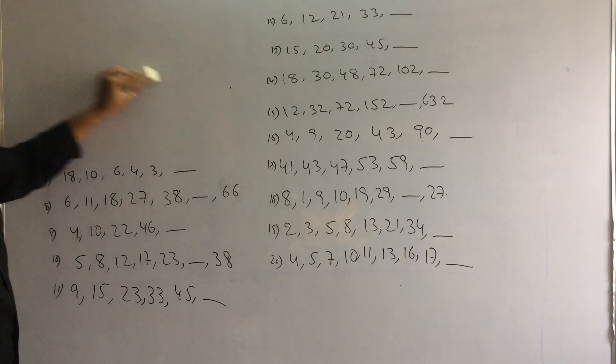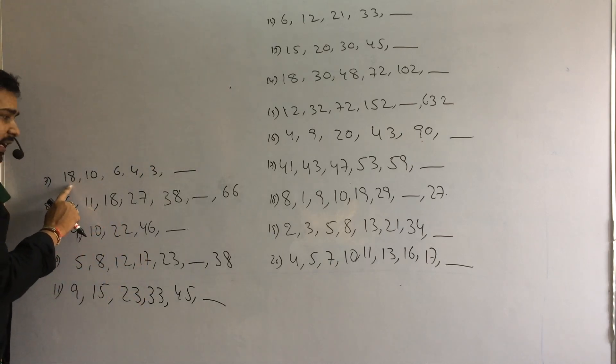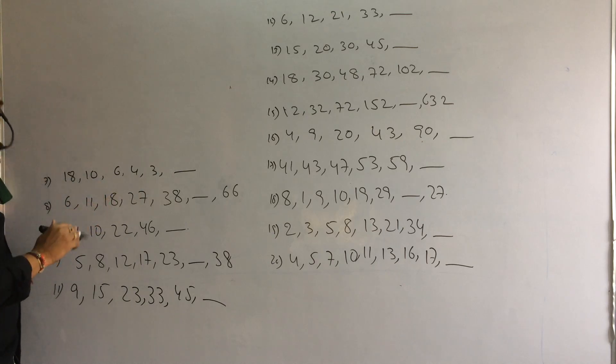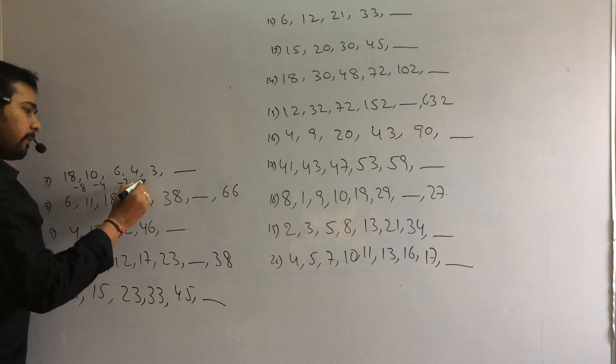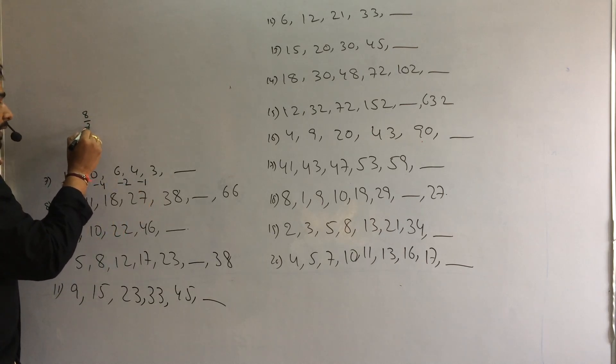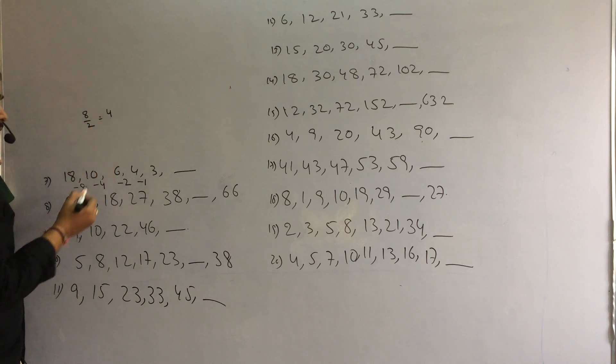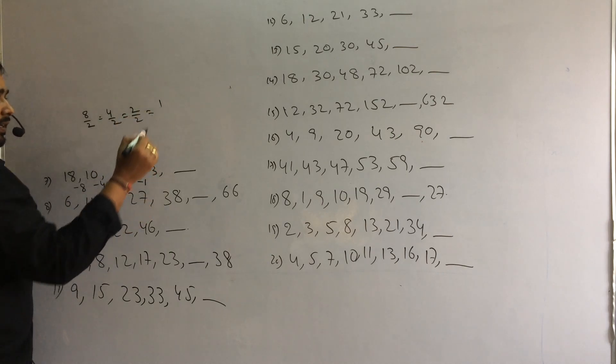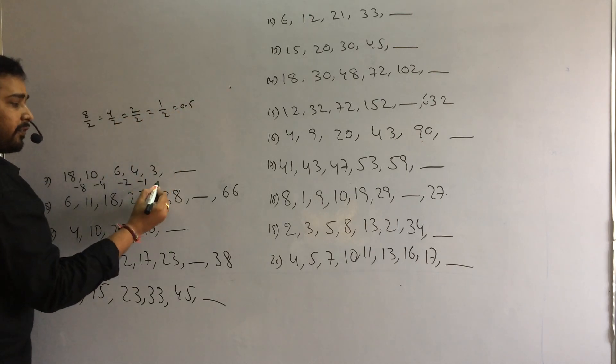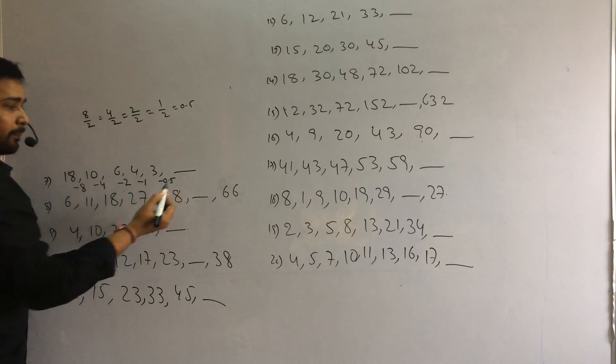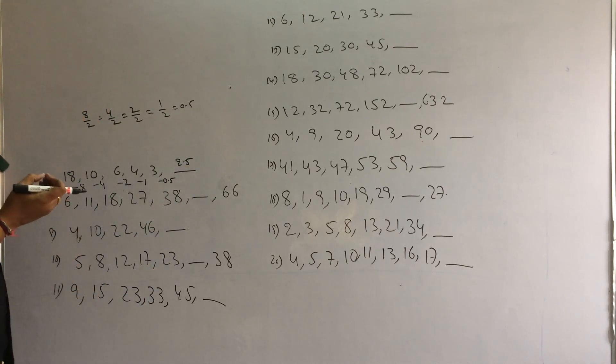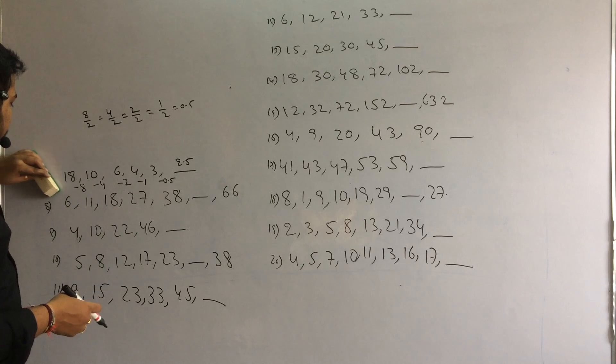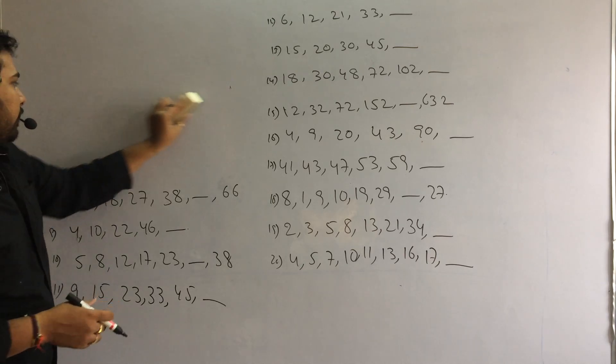Next. Here difference is very normal and they are in decreasing order. Difference is minus 8, minus 4, minus 2, minus 1. 8 by 2, 4. 4 by 2, 2. 2 by 2, 1. Next, 1 by 2 equals 0.5. So if we subtract 0.5 from 3, answer is 2.5. So answer is 2.5.